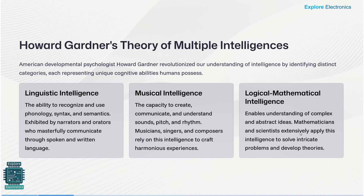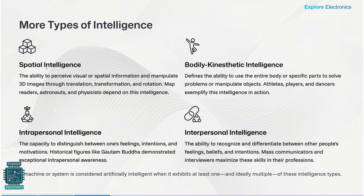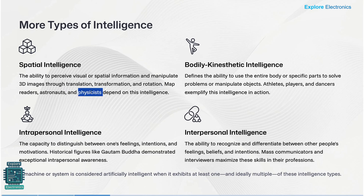The next is spatial intelligence — what we perceive in the external world. By looking at it, we perceive visual and spatial information and manipulate it into 3D images through translation, transformation and rotation. This spatial intelligence is used extensively by readers, astronauts and physicists to analyze the data they observe.